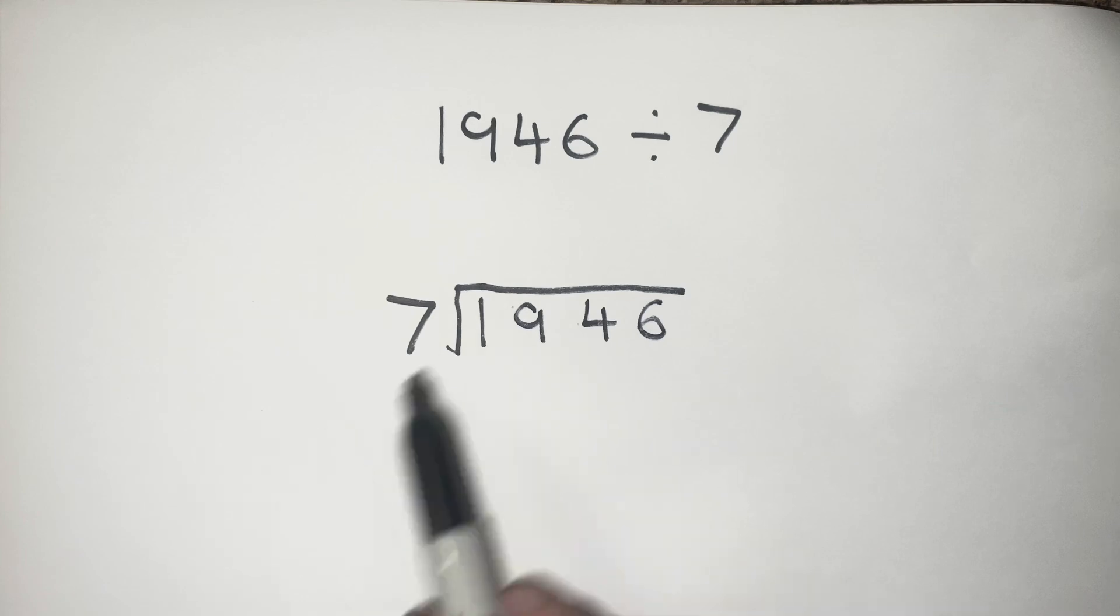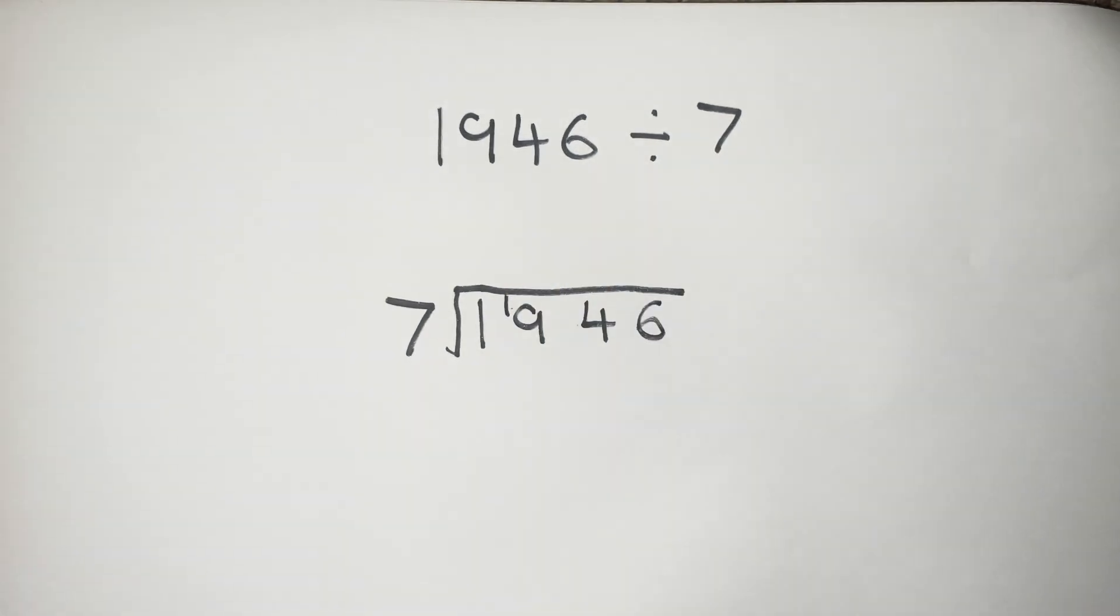So first of all, how many 7s go into 1? That's none. So we're going to carry that 1 over to the 9 to make 19.